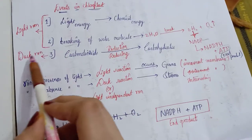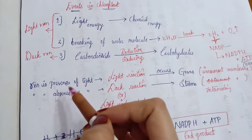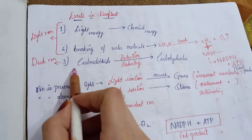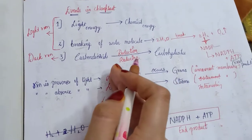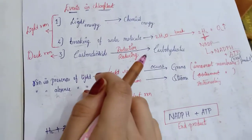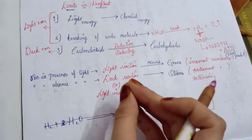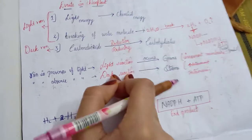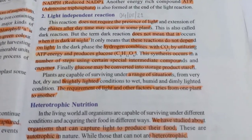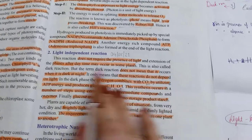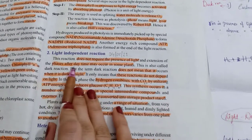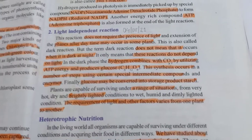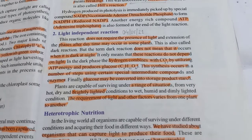The third event takes place in the dark reaction. Remember that although two reactions take place in light reaction, dark reaction is a large process. However, in today's class you only need a little bit of information — that is enough for now. So let us start: this reaction does not require the presence of light, and during daytime it may also occur in some plants.